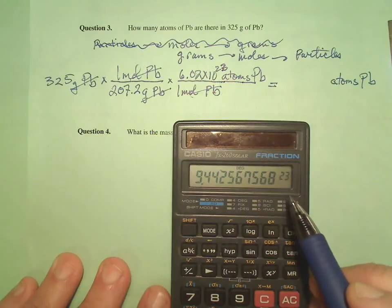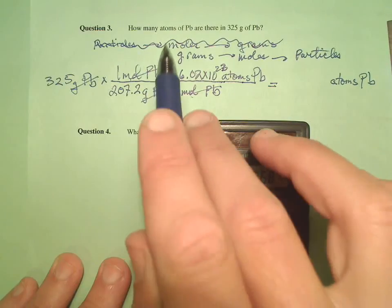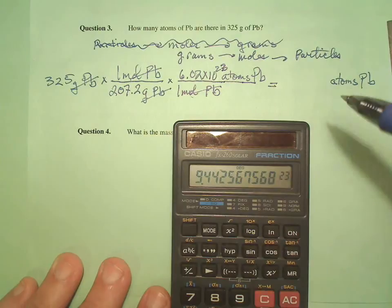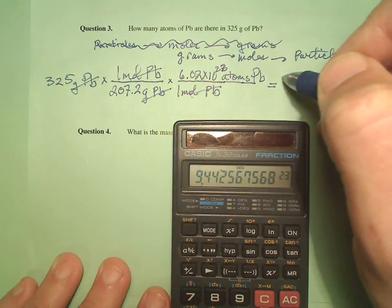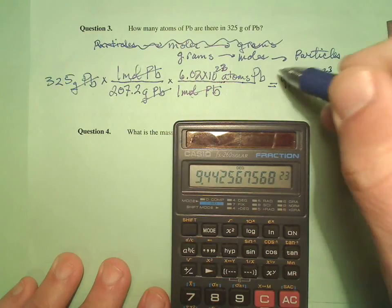All right, we've got a big number. Remember, we're going to have a good-sized number because atoms are really teeny-tiny things. So we're good to 3 sig figs here. So 9.44 times 10 to the 23rd atoms of lead.